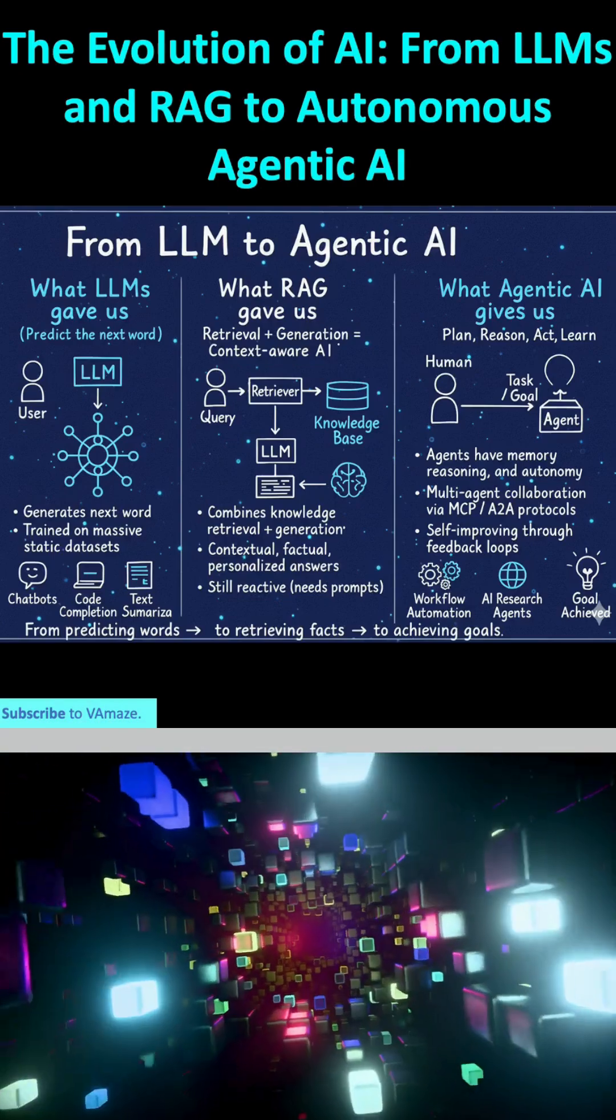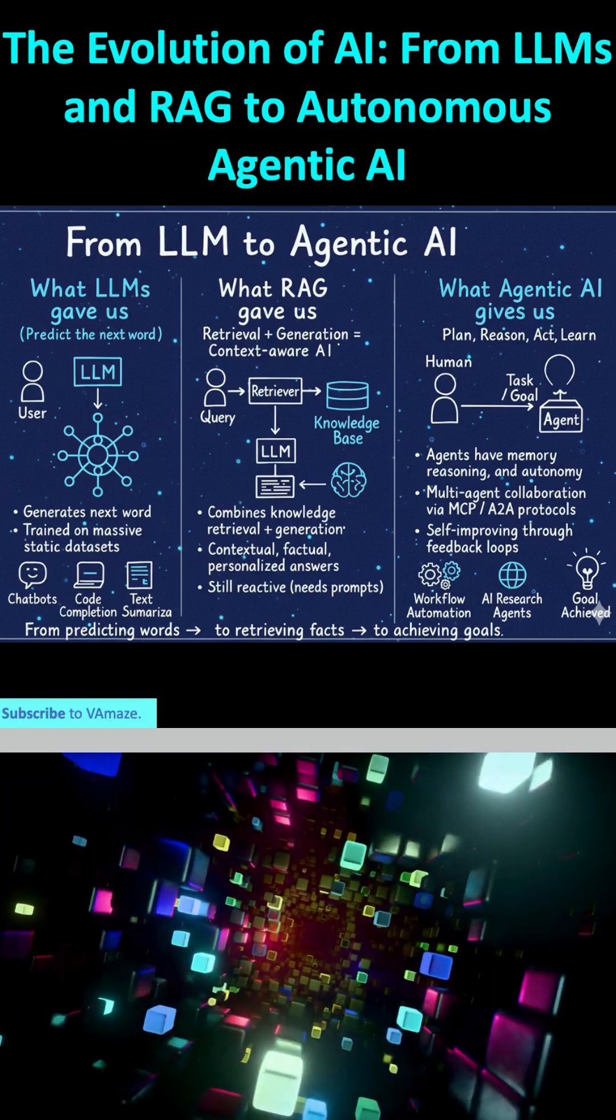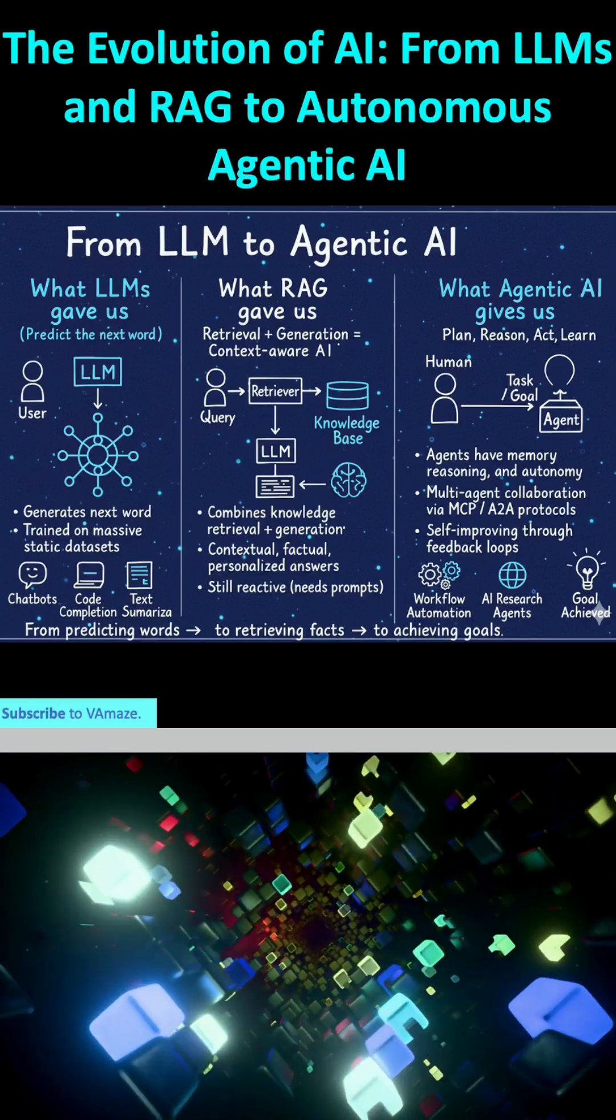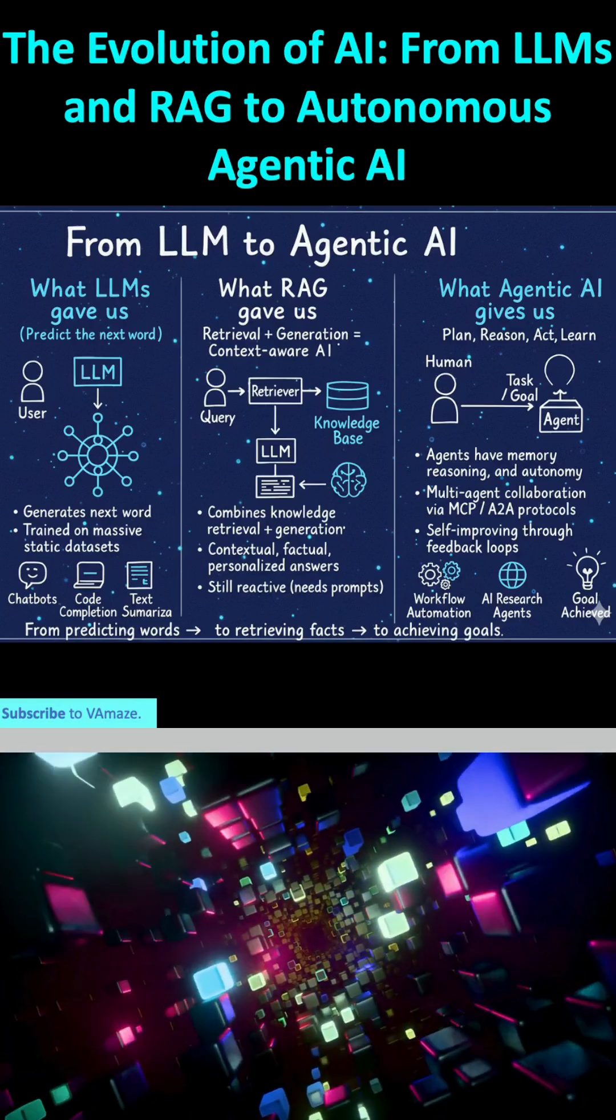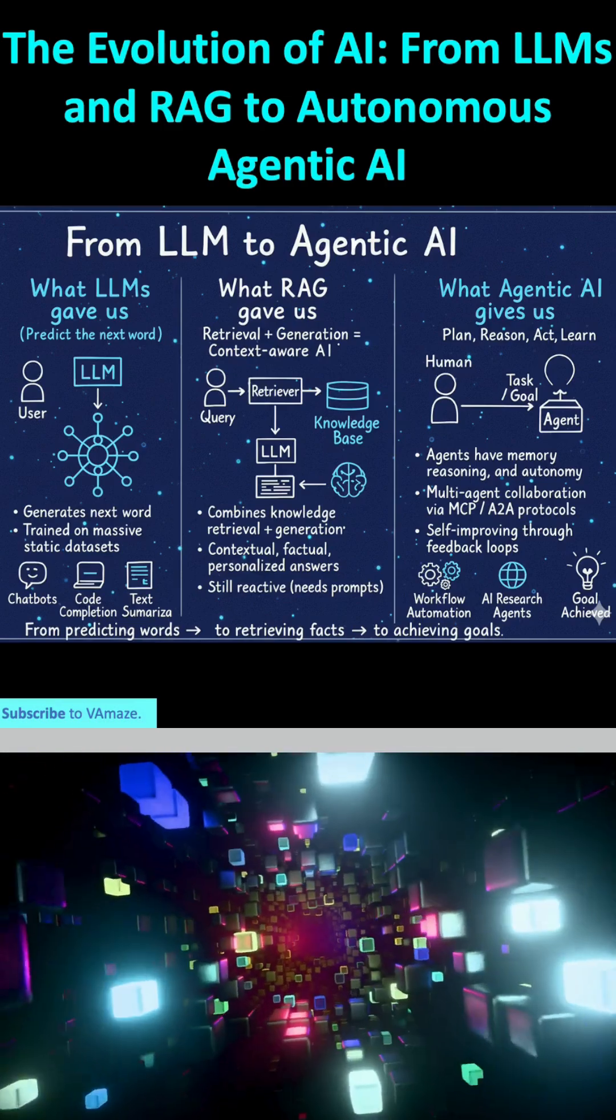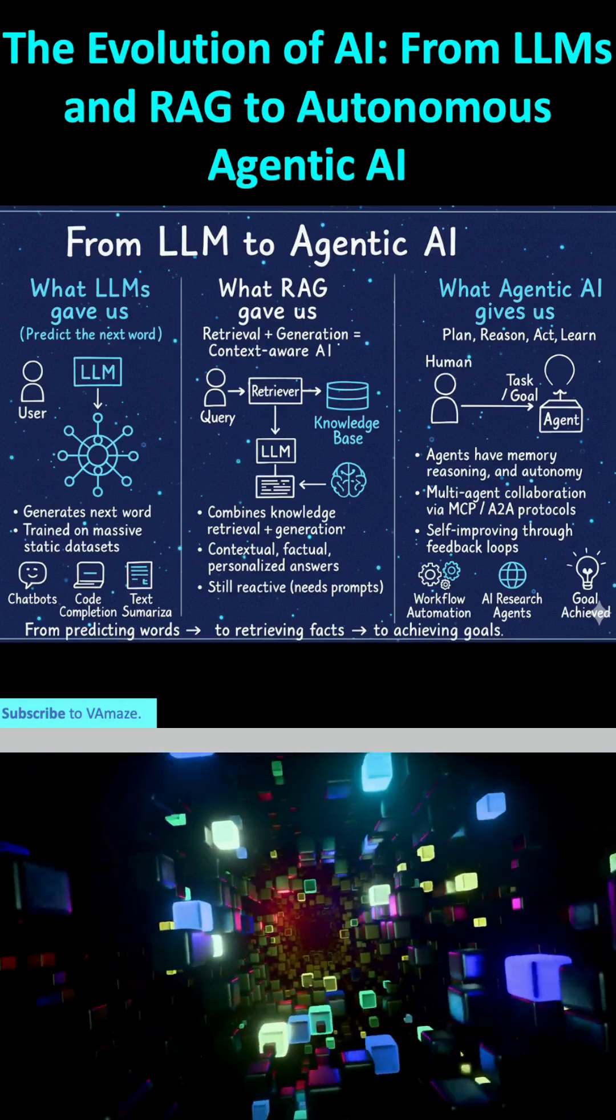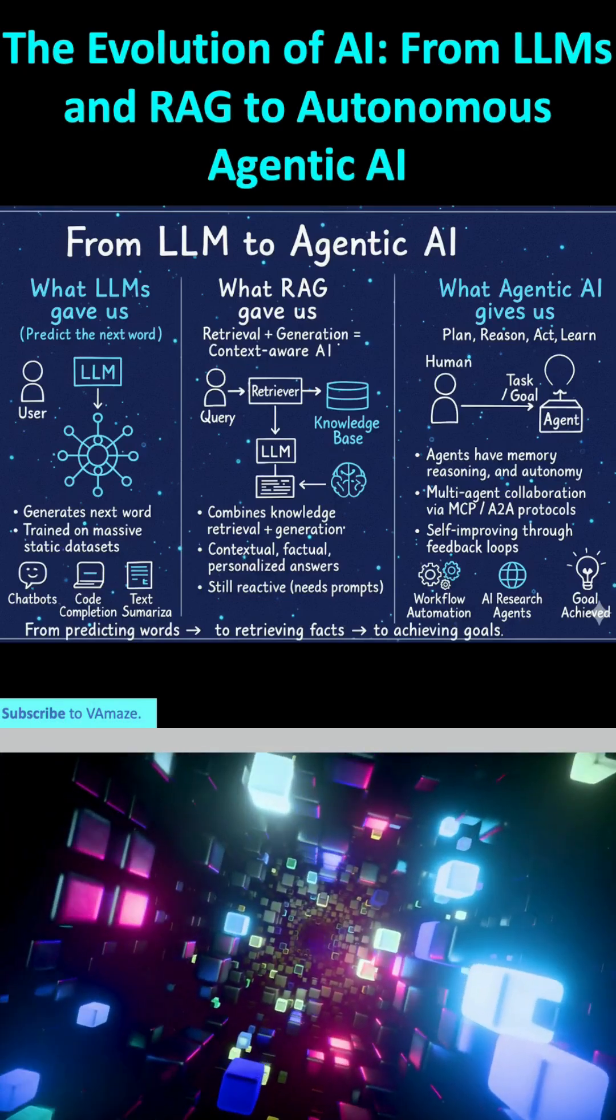First, let's look at what LLMs gave us. Initially, large language models like ChatGPT revolutionized how we interact with AI. At their core, LLMs are incredibly powerful prediction machines, trained on massive static datasets of text and code. You give them a prompt, and their fundamental task is to predict the next most probable word in a sequence.